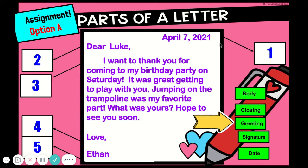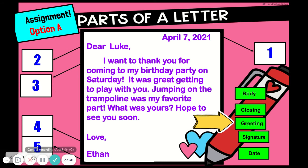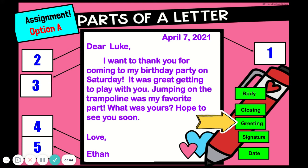For your assignment today you have two options. Option A: you're going to drag the labels and add them to the correct part of the letter. What do you think number one is? What do we call parts two, three, four, and five? You can drag the green boxes or copy and paste them. If you have a tricky time dragging, you can take a piece of paper, write numbers one through five, and write the name of the part of the letter you think it belongs with.